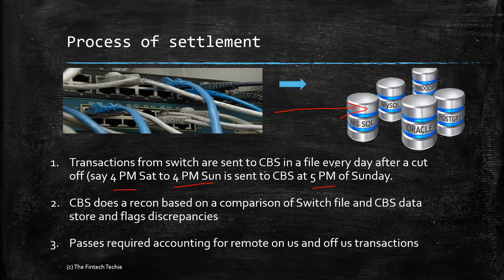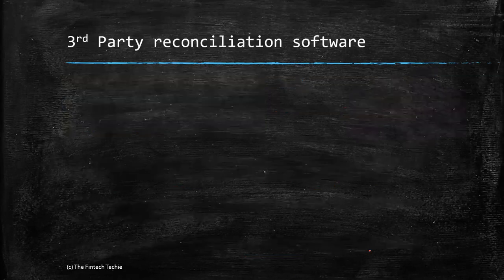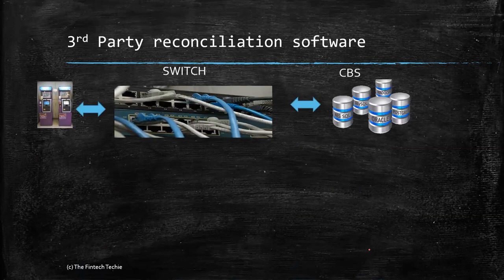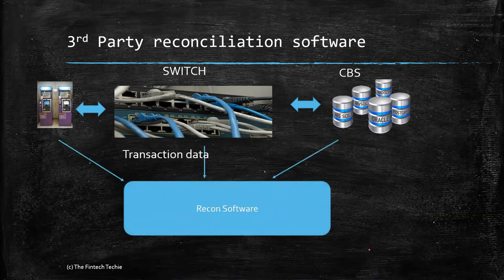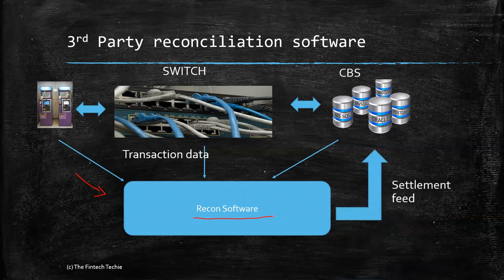Finally, it passes the required accounting entries for remote owner and office transactions. There could also be cases where settlement happens neither at the switch nor the CBS — the bank may employ a third-party reconciliation software, and data from the ATM, the switch, and the CBS are all sent to it. This software does matching between all three interfaces based on key parameters like the RRN (retrieval reference number), the STAN, or the card number. It does the reconciliation and creates a settlement feed so that the CBS can debit accounts for remote owner or office cases.